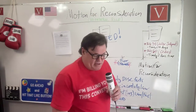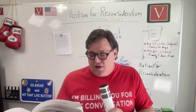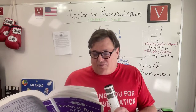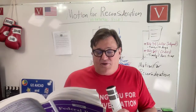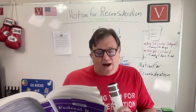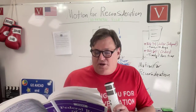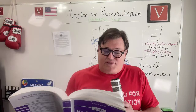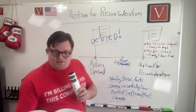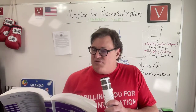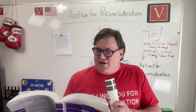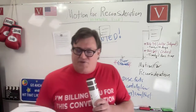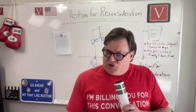Under Rule 60, which deals with orders rather than judgments, the grounds are broader. Rule 60 covers corrections based on clerical mistakes, oversights, and omissions. The court may correct a clerical mistake or a mistake arising from oversight or omission whenever one is found in a judgment, order, or other part of the record — on its own motion or on a motion, with or without notice. Under Rule 60, grounds include: mistake, inadvertence, surprise, excusable neglect, newly discovered evidence, fraud, and manifest injustice. Check these two code sections carefully if you need to file a motion for reconsideration.